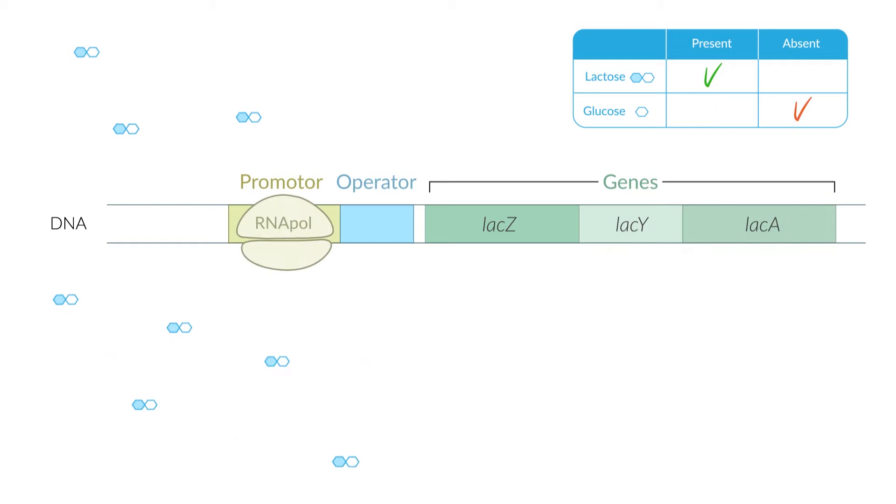However, if there's a very low glucose concentration, the cell needs to break down as much lactose as possible. This is secured as follows. If little glucose is available in the cytosol, the cAMP concentration increases.